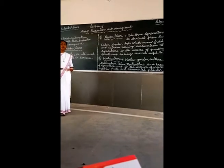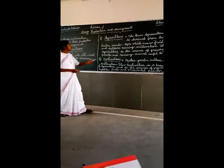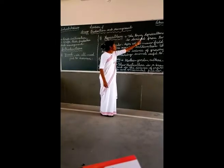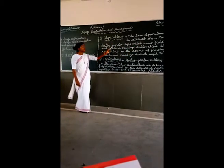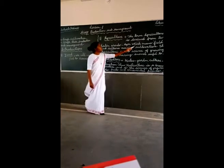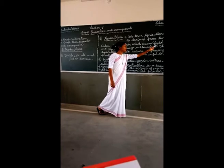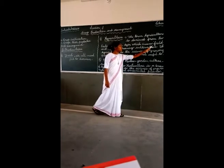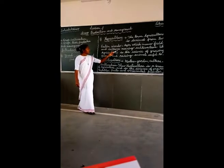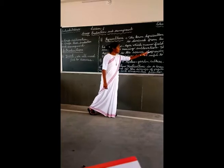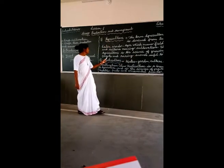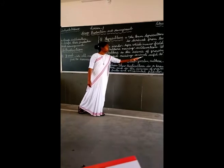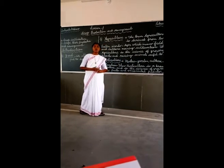We shall now see Point number 2: What is agriculture? The term agriculture is derived from two Latin words. First, 'Agri,' which means field. Second, 'culture,' meaning cultivation. So we can say agriculture is the science of growing plants and raising animals useful to all human beings.